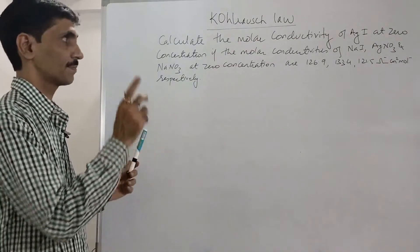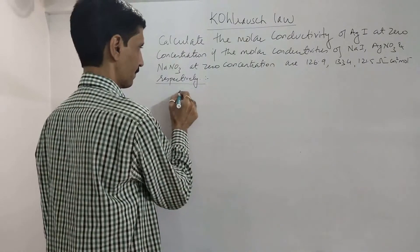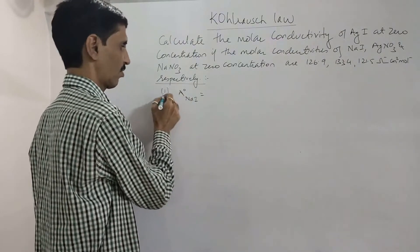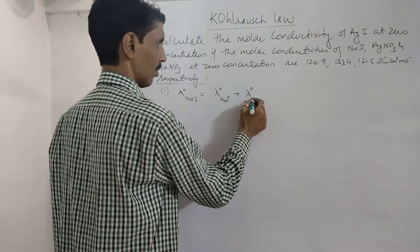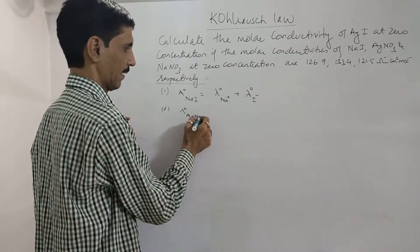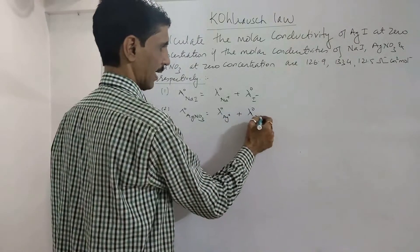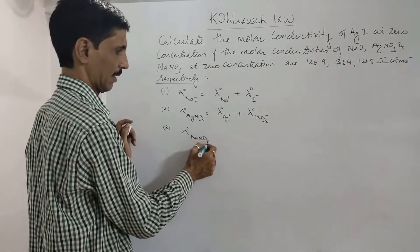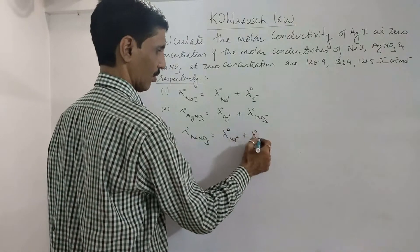To begin with, applying Kohlrausch law: the molar conductivity at zero concentration of NaI (equation 1) is equal to λ⁰(Na⁺) + λ⁰(I⁻). The molar conductivity of AgNO₃ equals λ⁰(Ag⁺) + λ⁰(NO₃⁻). The molar conductivity of NaNO₃ equals λ⁰(Na⁺) + λ⁰(NO₃⁻).